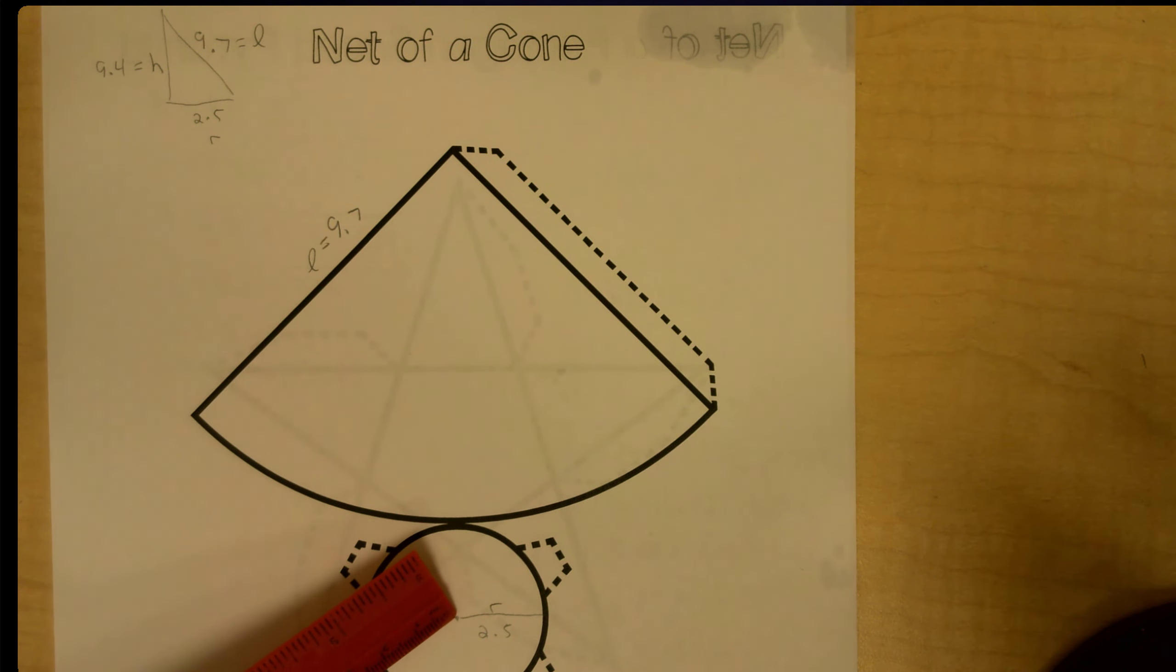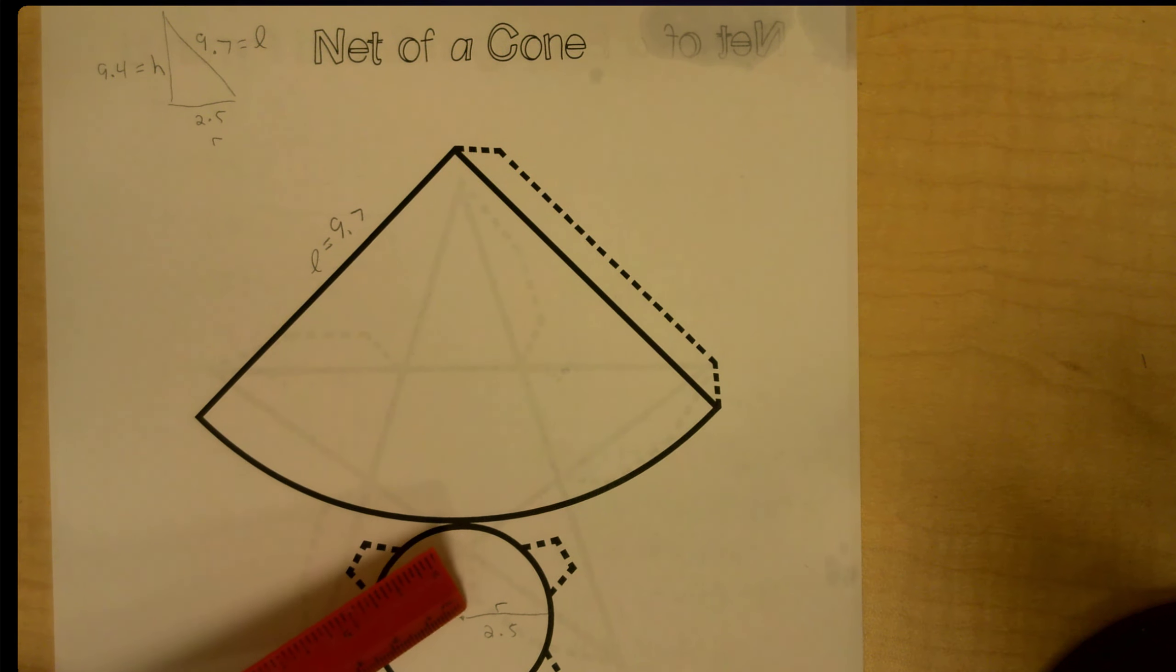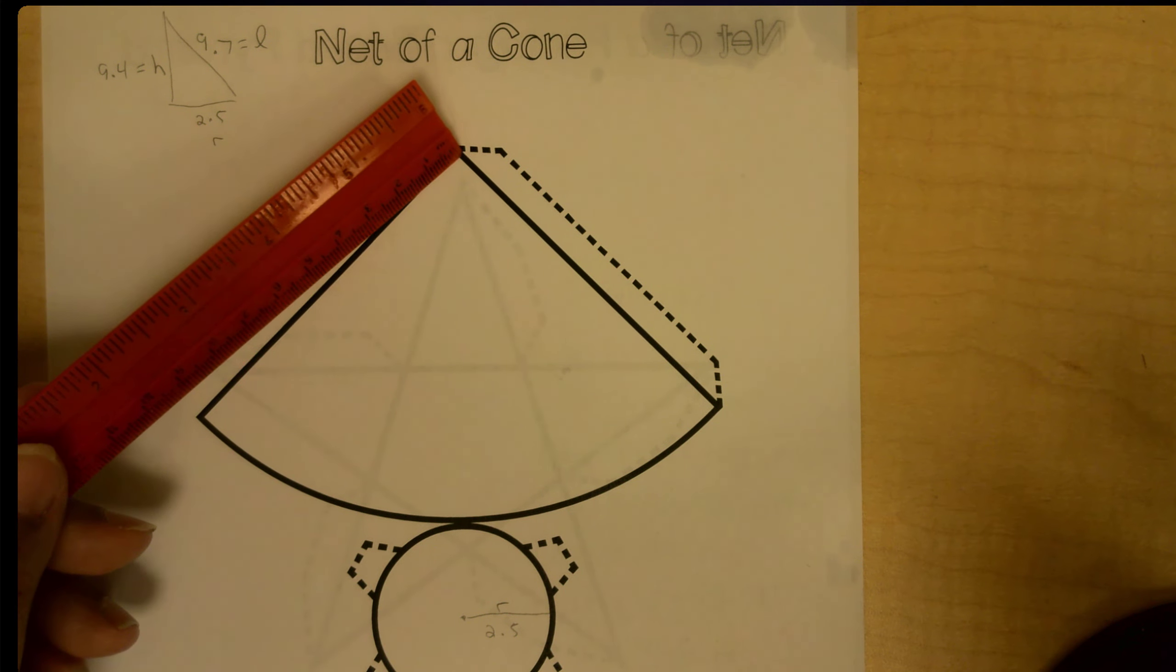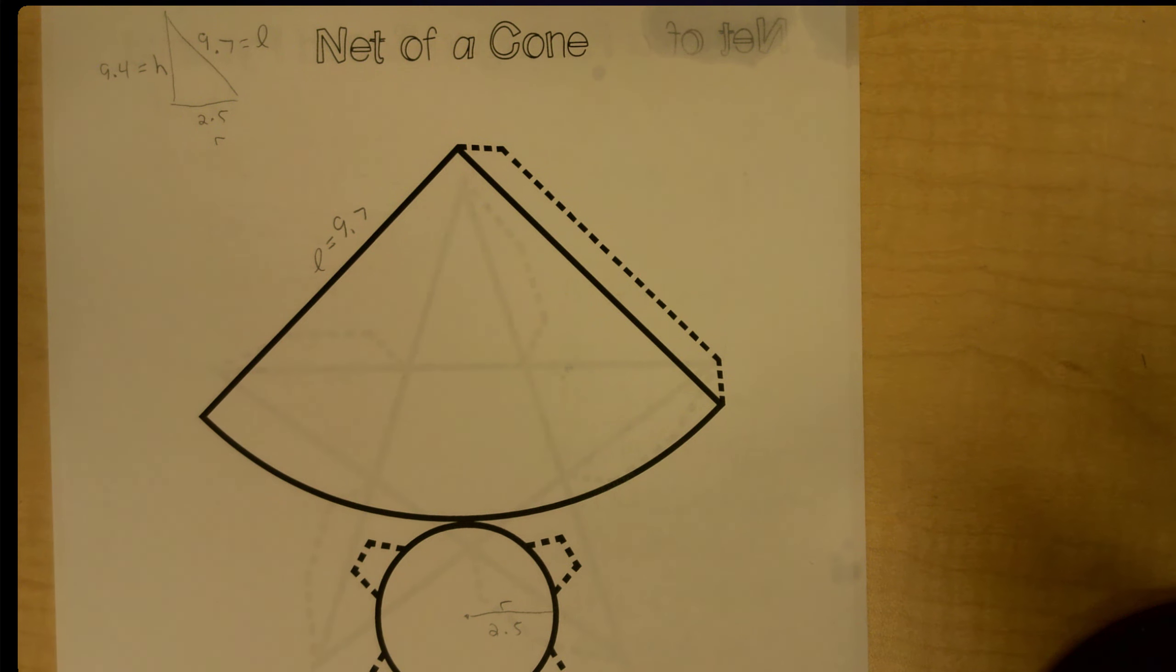And I measured my radius of 2.5. Because it's a cone there was a third height I had to find, the vertical height of the cone. I had to do some calculations on that to find that vertical height.